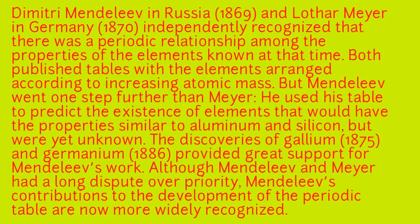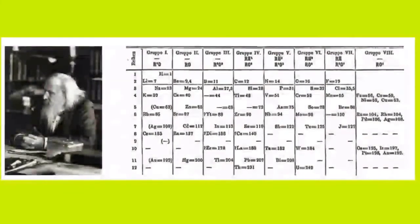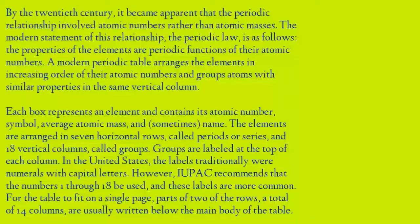Although Mendeleev had a long dispute over priority, Mendeleev's contributions to the development of the periodic table are now more widely recognized. In this figure you can see Dimitri Mendeleev, who was widely passionate about the periodic table. Elements can be categorized in groups — the vertical columns and the horizontal rows — as he stated in his earlier version of the periodic table.